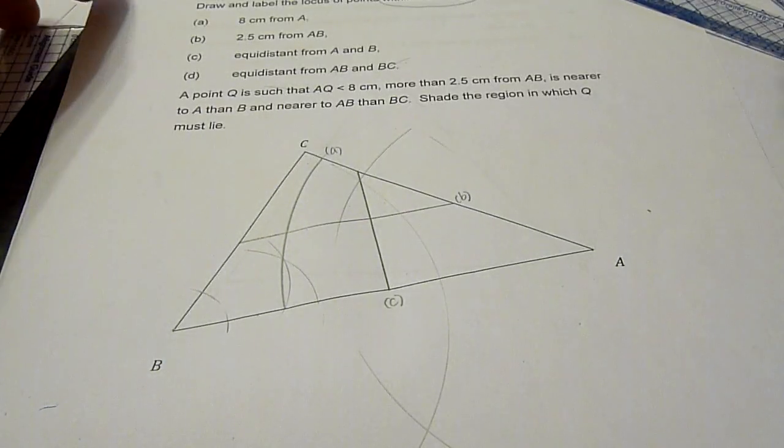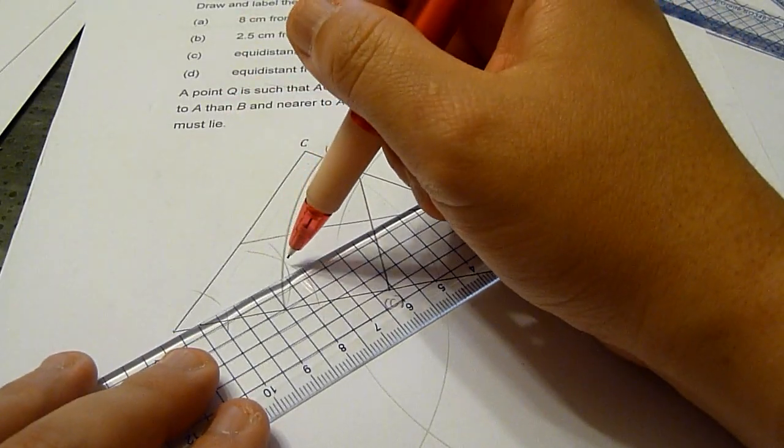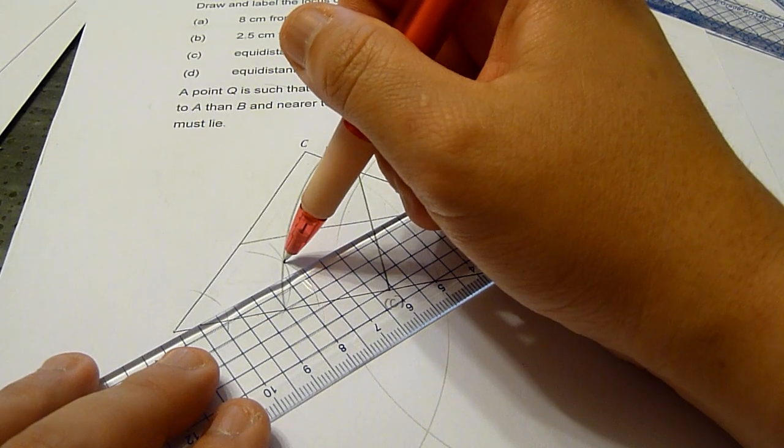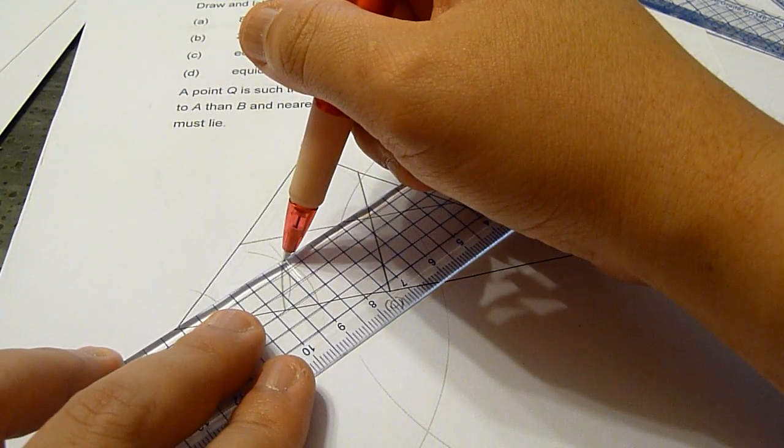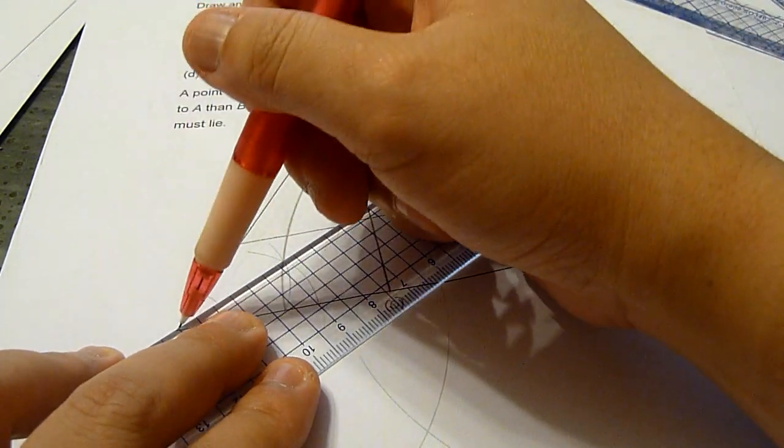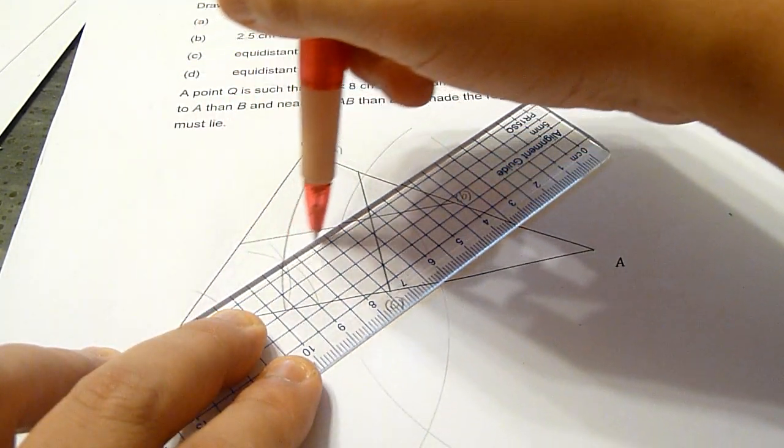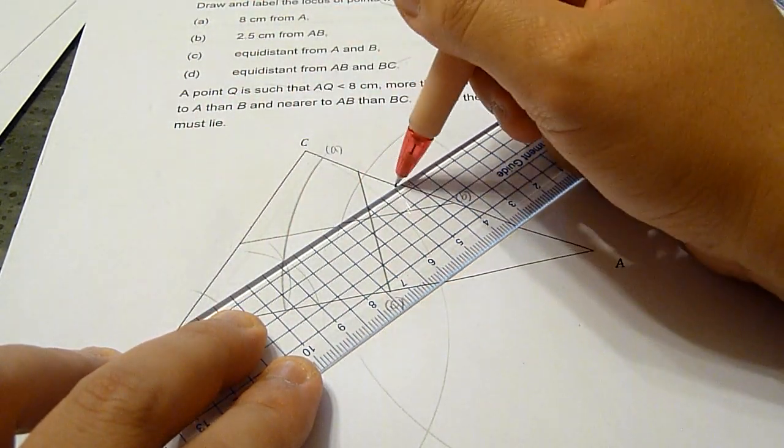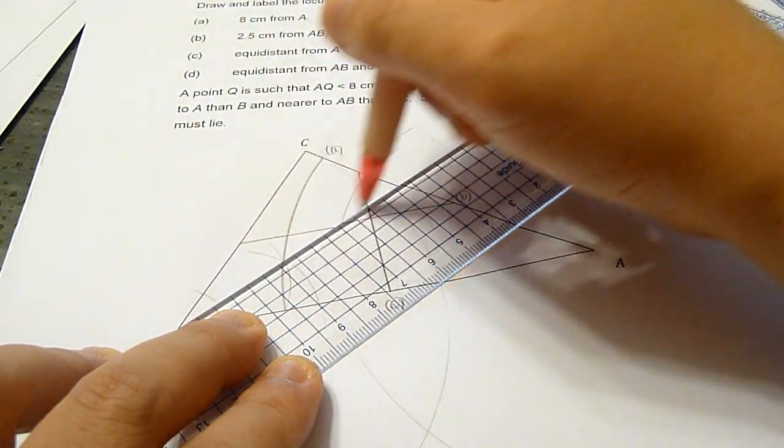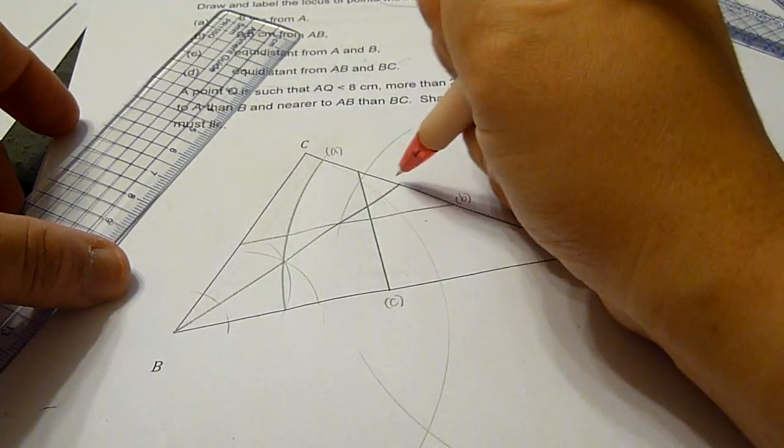And now, we draw the intersection point of the two arcs to the point B. And we draw the bisector of the angle within the triangle, which is here.